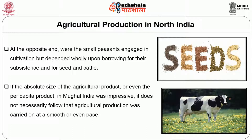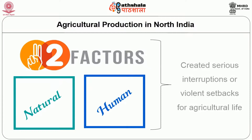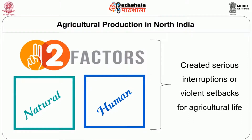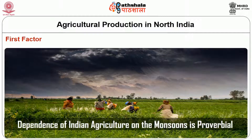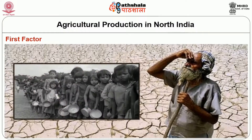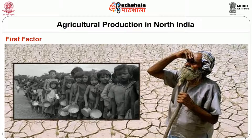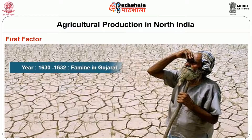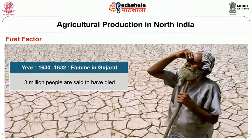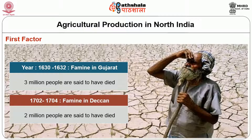Even if the absolute size or per capita agricultural product in Mughal India was impressive, agricultural production was not carried on at an even pace. There were two factors — one natural, one human — which created serious interruptions and violent setbacks. The first was climatic: the untimeliness, scarcity, or superfluity of rain. In the 1630-32 famine in Gujarat, 3 million people are said to have died; in 1702-04, 2 million people are said to have died of starvation in the Deccan.